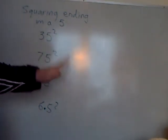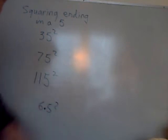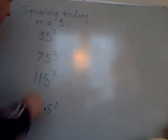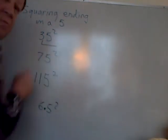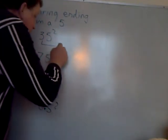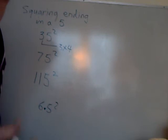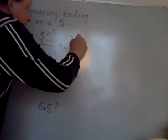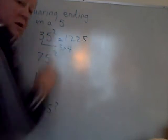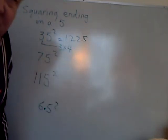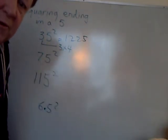Okay, here's a trick for squaring any number that ends in a 5. All you do is take the tens digit, in this case 3, and multiply it by the next highest number. So 3 times the next highest number is 4. That gives you 12. Then just attach a 25 to it. So there's your answer, 1,225.